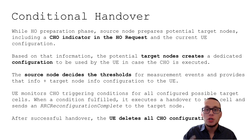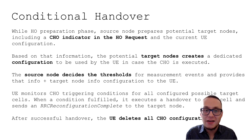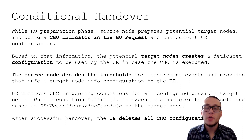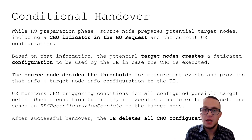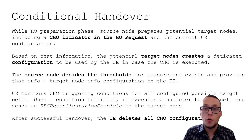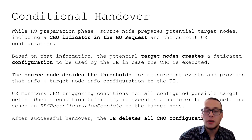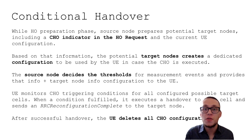By doing that, it increases the probability of successful message delivery between UE and base station, because it helps avoid very bad radio conditions at the cell edge. In the preparation phase of conditional handover, the source base station prepares potential target nodes and target cells, including a special indicator for conditional handover in the handover request along with the current UE configuration. Based on that information, potential target base stations create a special configuration and are ready to receive that user equipment. The source node decides thresholds for the conditions and provides them in advance to the user equipment. The UE monitors handover triggering conditions for all potential target cells, and when a condition is fulfilled, it executes the handover to one target cell. The UE will delete handover configurations for other potential target cells after a successful handover.